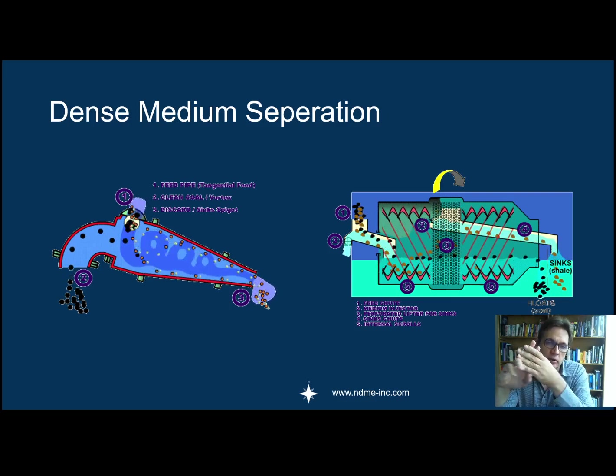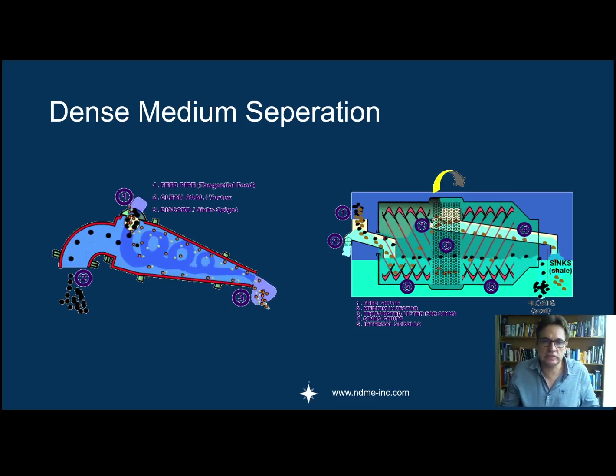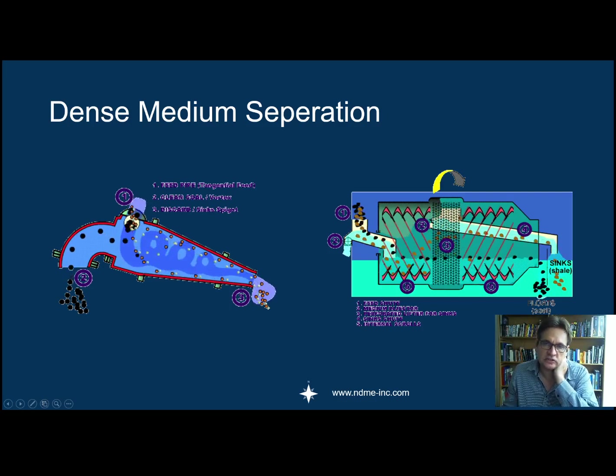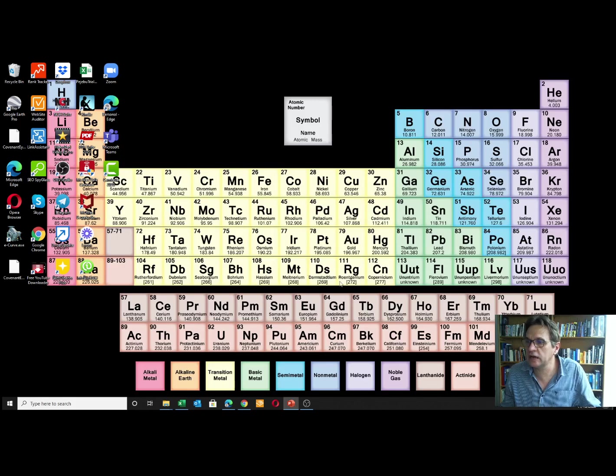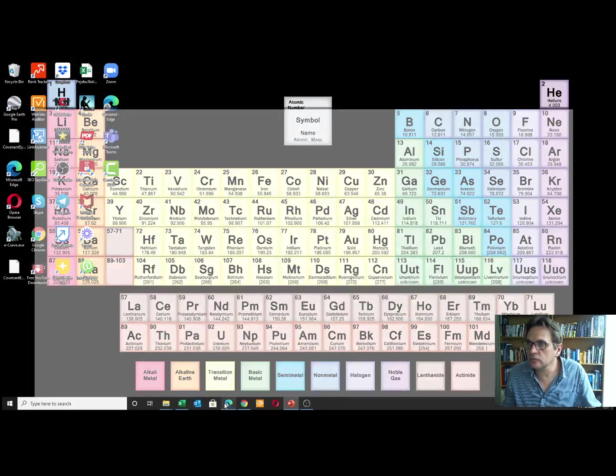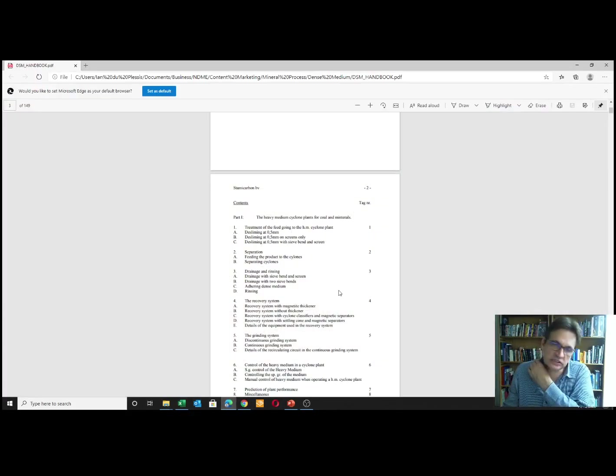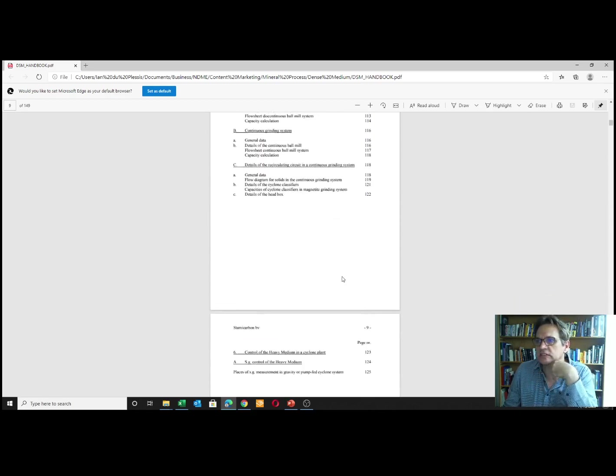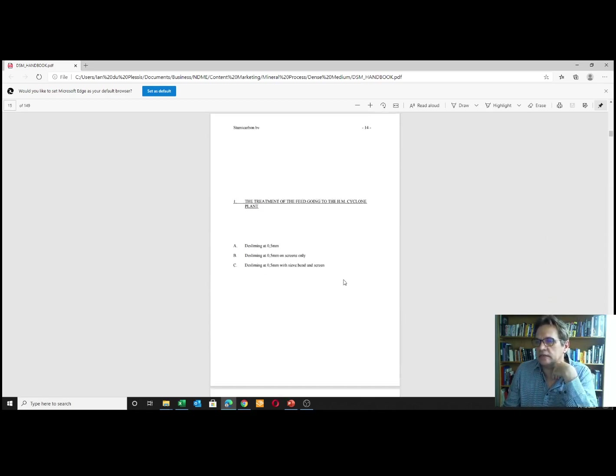Dense medium separation is based on a lot of work done over the years, and the best exponent of the overall design would be the Dutch State Mines manual. This is a manual done in about the 1950s—you can see it's about 145 pages—and it goes into all sorts of detail on how to set up a dense medium separation plant, all the screens, and the dense medium separation device as such.